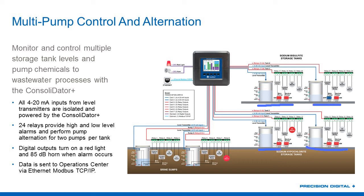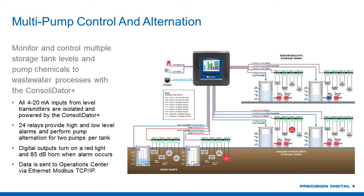It's doing less control per individual tank than what we just saw, but it's doing it in all four of these locations and then duplicating essentially the same setup in the brine sumps. Here too, I've got my Ethernet TCP/IP that can go out to the operations center, and I've got a red light and horn on here to alert folks in the field if there are any problems. When we see these applications coming up, keep in mind that they're doing a lot more than just displaying information from a transmitter — they really can be the center of that control system.